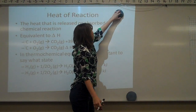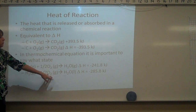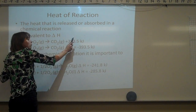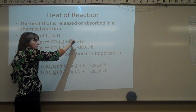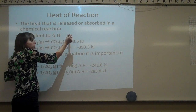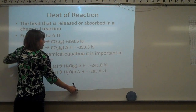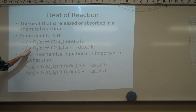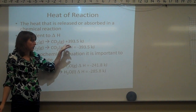Heat of reaction: the heat that is released or absorbed in a chemical reaction is called the heat of reaction, and it's equivalent to enthalpy. When you have the heat of reaction on the product side, heat is being released — meaning products have less energy. Going from high energy to low energy, with energy being released, gives a negative enthalpy. For example, carbon and oxygen combining to make CO2 has a negative enthalpy because it's exothermic.